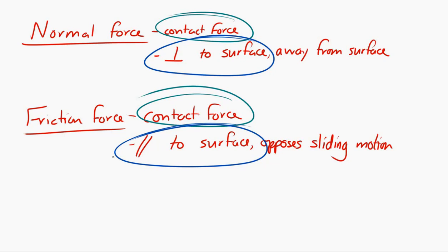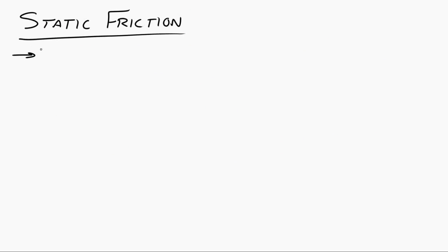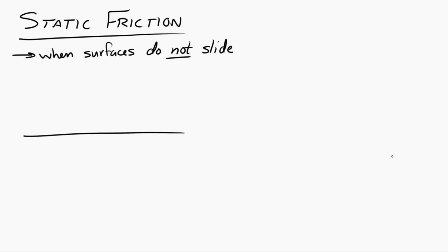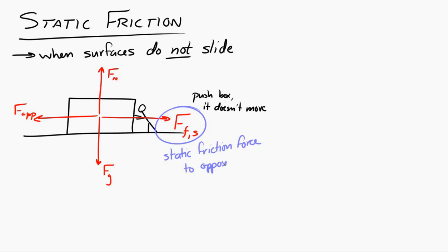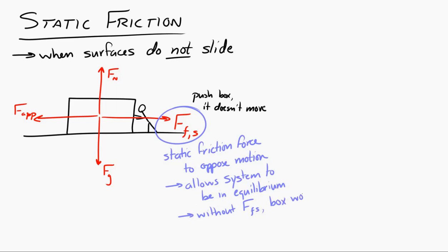There are two types of friction: static friction and dynamic friction. Static friction appears when there's no sliding between two surfaces. If you push a box and it doesn't move, the forces present are weight, normal force, applied force, and a static friction force opposing the motion. Static friction allows the system to be in equilibrium — without it, the applied force would be unopposed and the object would accelerate.